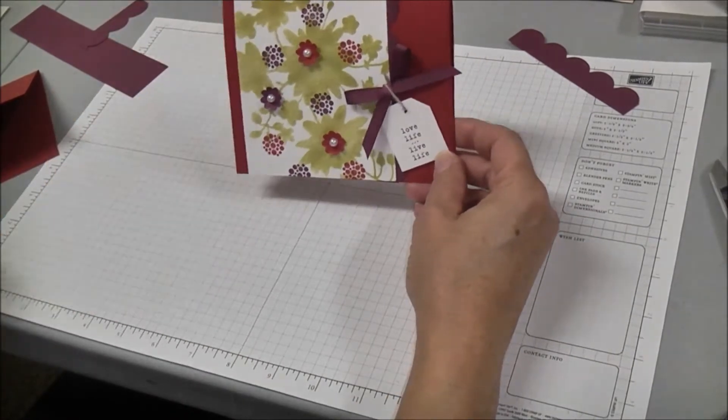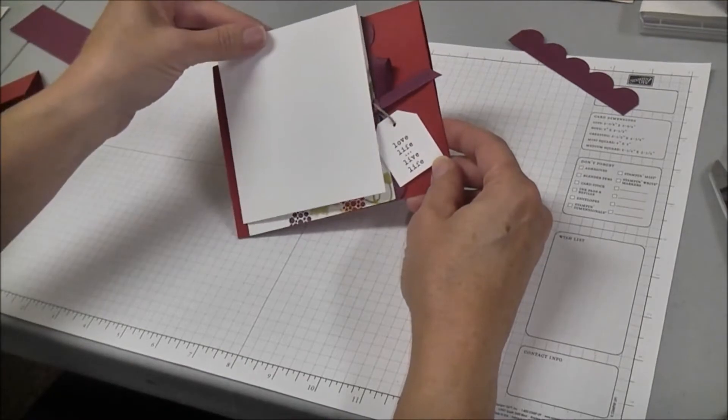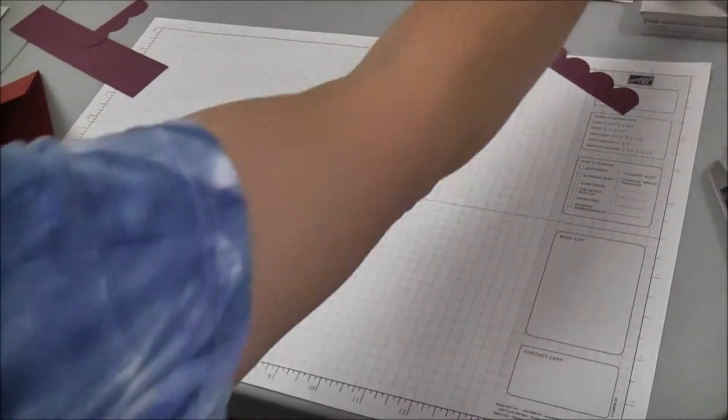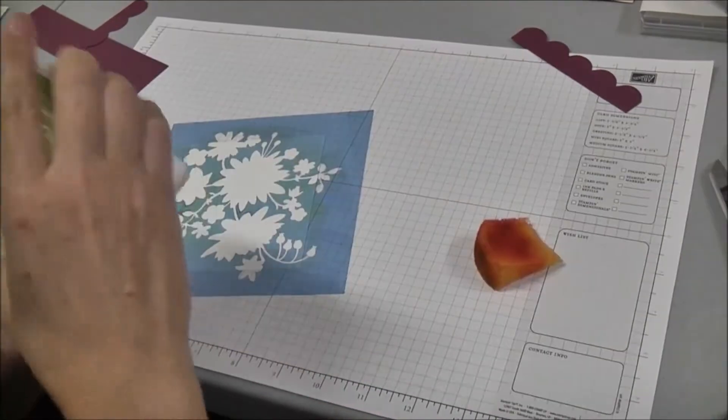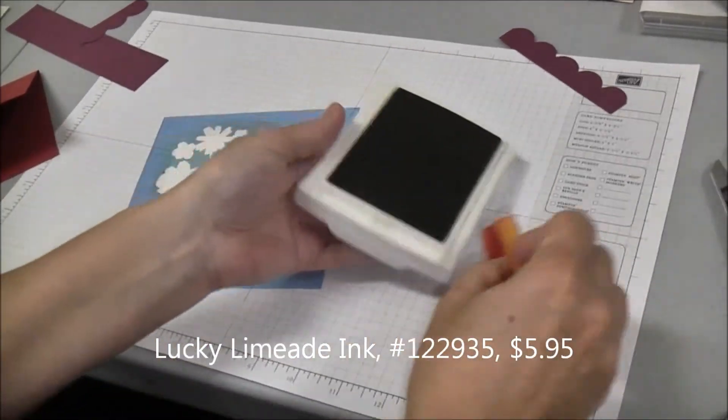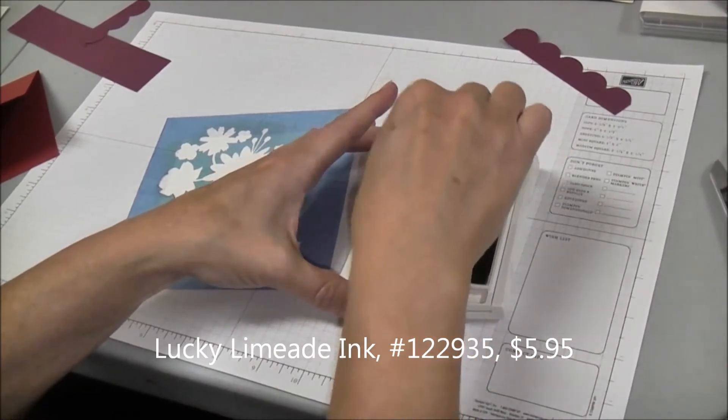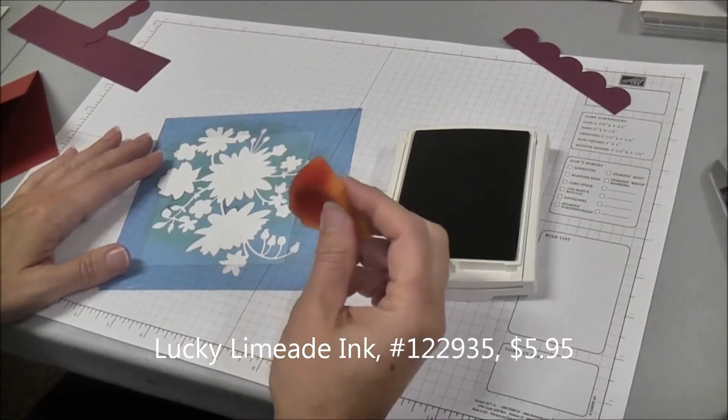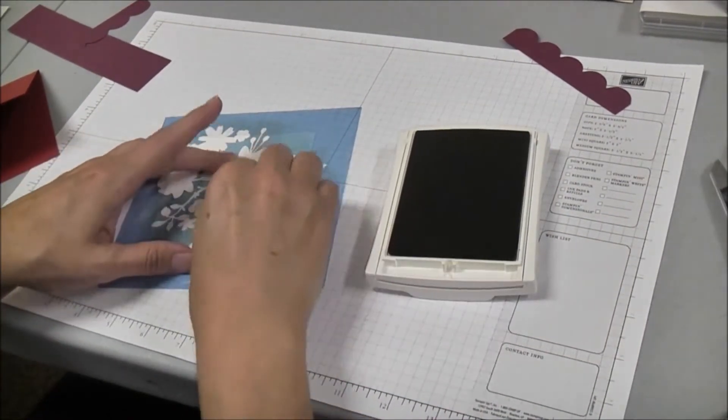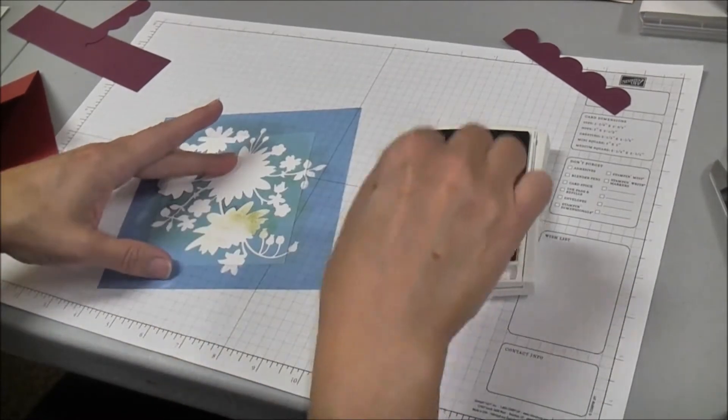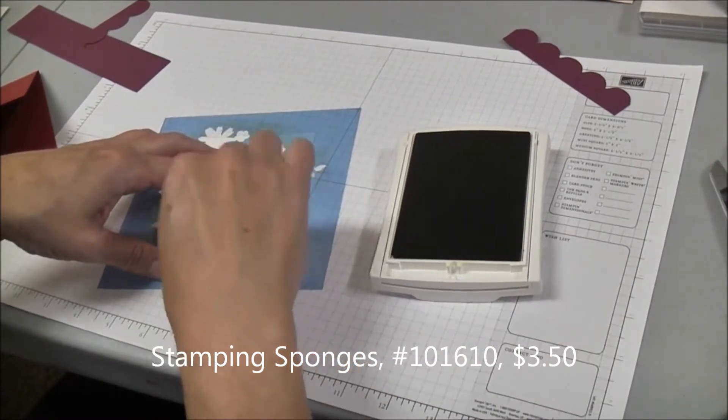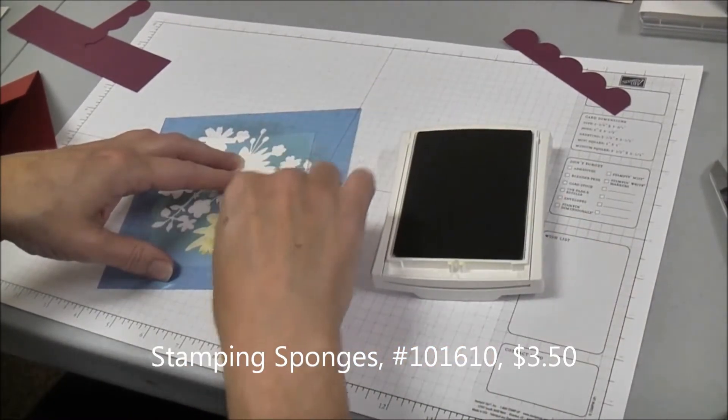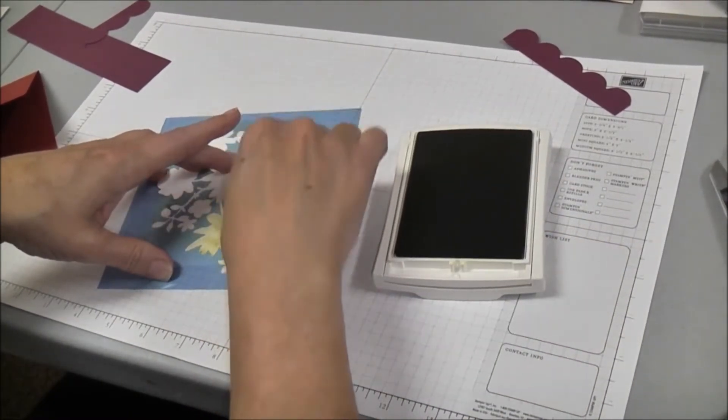The first thing we're going to do is take the white piece and use our stencil to put all the green Lucky Limeade ink. We're just going to use a sponge and sponge all the different flowers in the stencil until you get the entire front of that white piece covered with your flowers.